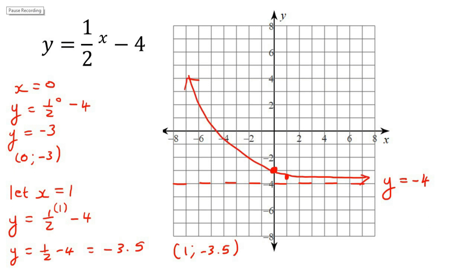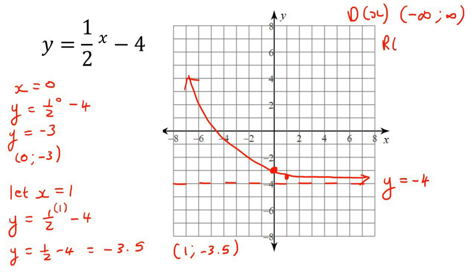I realized I forgot to show you the domain and range for the first examples. For the domain, remember that the domain is your x values. If you look at the x values of this graph, it can go all the way to the right and all the way to the left. So the domain will just be from negative infinity up to positive infinity. For the range — that's the y values — the y values can go all the way up, but they cannot go below this number. The lowest y value this graph would ever have is negative 4, using a round bracket because it never touches the asymptote, and the highest y value goes up to infinity.